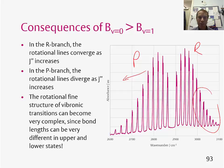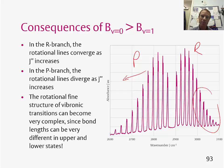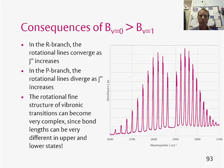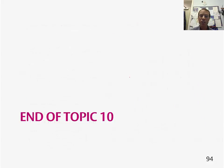If you have an electronic transition — if you change the electronic configuration of a molecule — you can expect the bond length to change significantly, meaning the rotational structure of vibronic transitions can become very complex. But we're not going to worry about this for this course. That brings us to the end of topic 10.